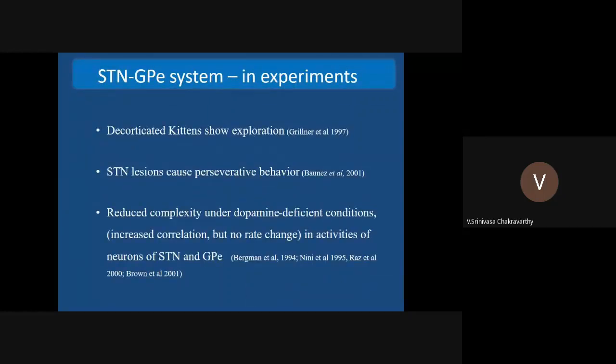Under Parkinson's conditions, the dynamics becomes more regular. So there's no dynamic complexity. And that's what you see in this last one, reduced complexity under dopamine deficient conditions. That's the kind of condition you find in Parkinson's disease. So we are trying to connect all these dots and propose a theory.